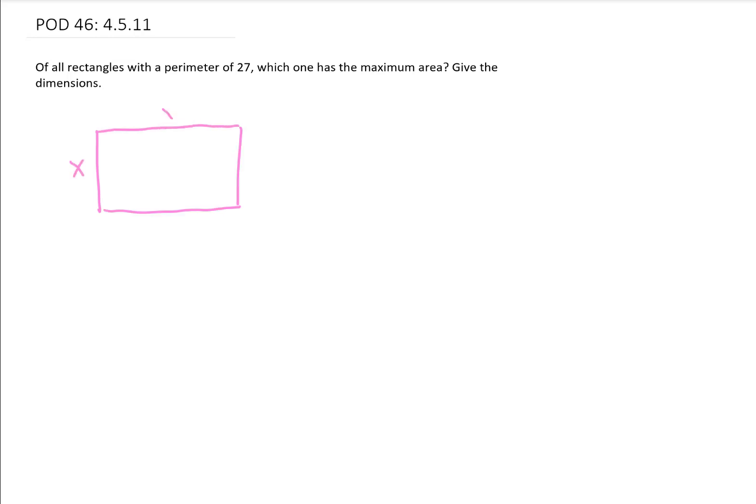Let's call this width here x and this length y. And we're told that the perimeter of this rectangle is 27. So the perimeter of this rectangle is 2x plus 2y, and we know that that has to add up to 27. So we'll probably use that fact here in a second.